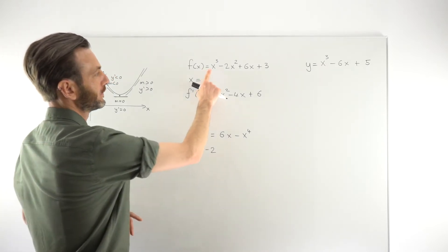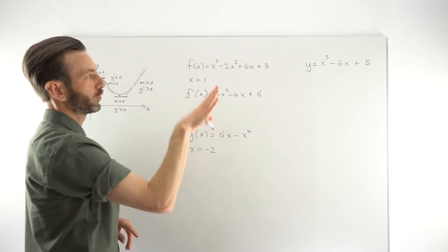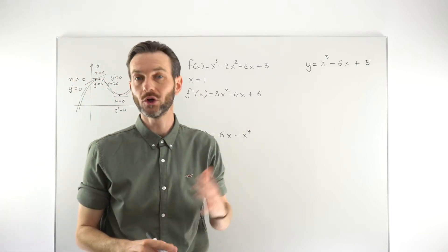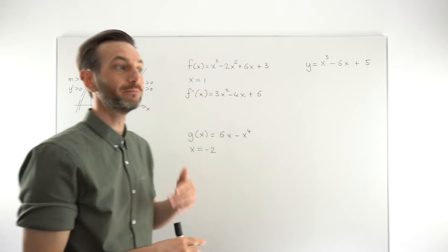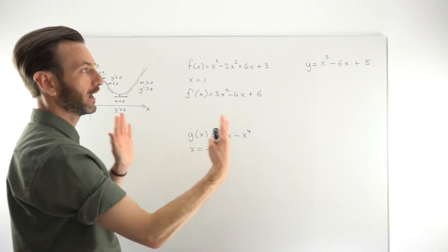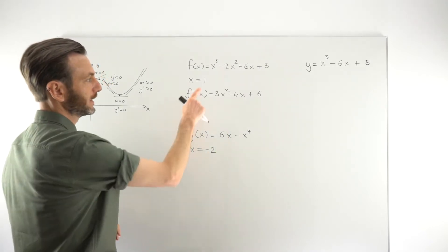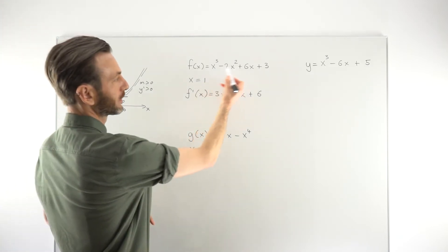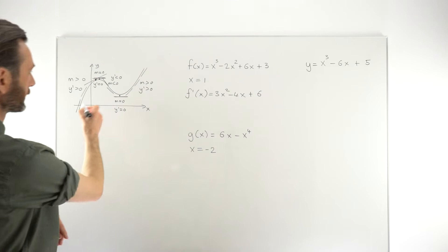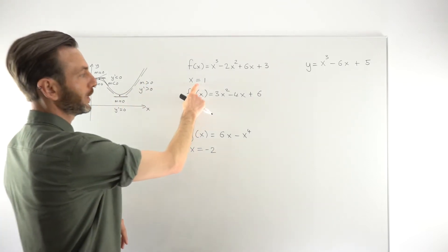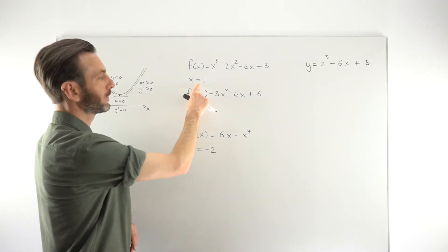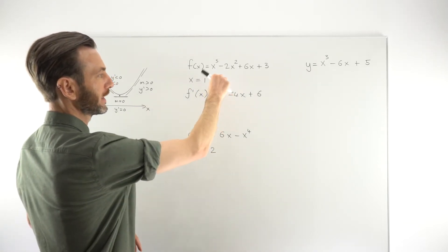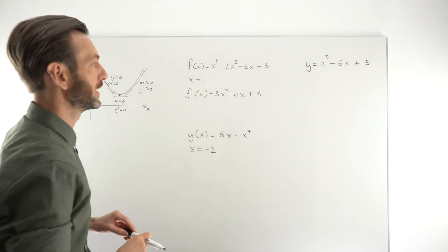We want to evaluate whether this function is increasing or decreasing at the point x = 1. It doesn't make sense to talk about a function just increasing or decreasing — it has to be increasing or decreasing either at a point or on an interval. Here we're dealing only with the point x = 1, so we're determining whether the graph is sloping up, stationary, or sloping down at that point.